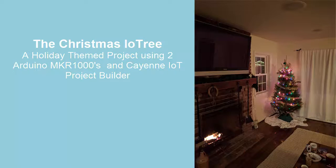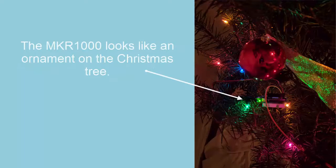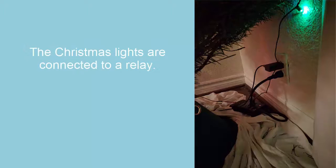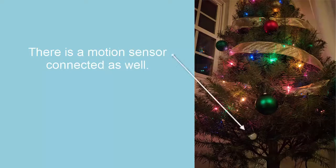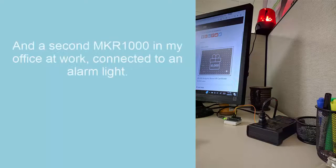This is my project, the Christmas IoT tree. It uses two MKRs and Cayenne IoT project builder. The MKR on the Christmas tree looks like an ornament. It's connected to the Christmas lights and also a relay that's hidden behind the tree. There's also a motion sensor that's connected to the MKR and it detects motion around the tree.